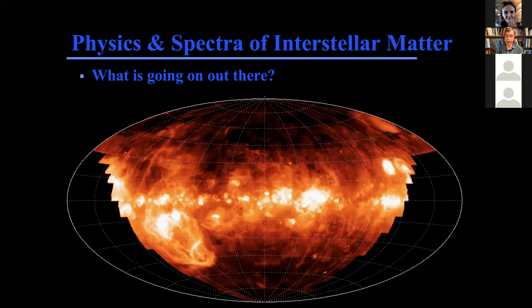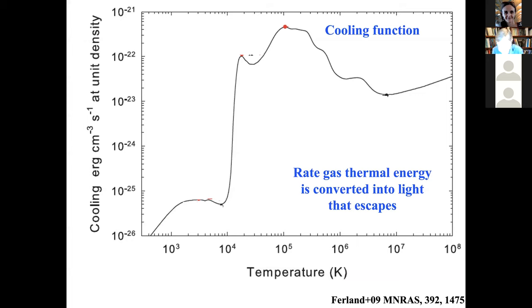The second big picture topic: this is the Wikipedia image of the interstellar medium — the Wisconsin H-alpha Mapper. This is a picture of the Milky Way galaxy taken with the H-alpha optical emission line. To understand the basic structure of the ISM, you want to think about what's called the cooling function. The cooling function is probably the most basic thing about interstellar matter — it's the rate that gas thermal energy is converted into light that escapes, the rate that the gas cools off.